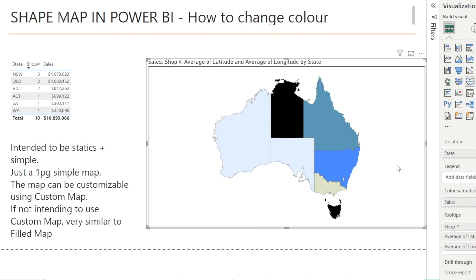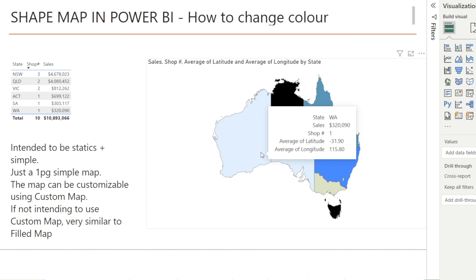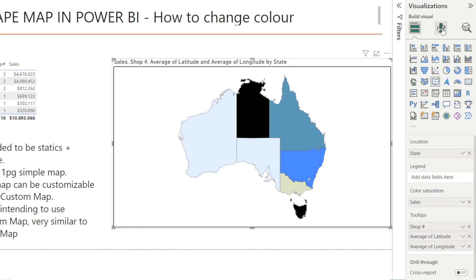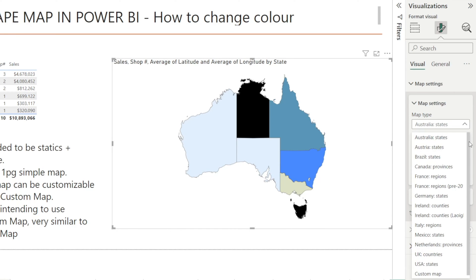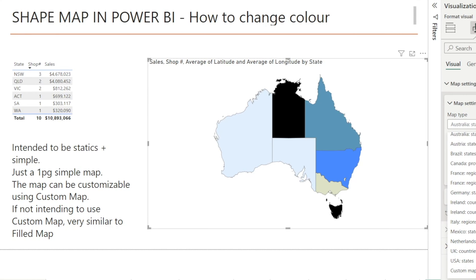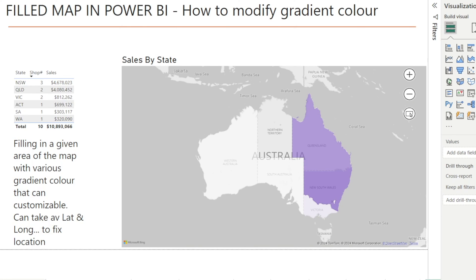The next map is a shape map. Shape map is very similar to field map. The difference is we can't zoom in, so in a way it is probably better to use a field map if the map you want is available in field map, such as Australia by state. However, shape map has a plus: you can create your own custom map and load it. In the map settings, there are some standard maps by state, but there is also the ability to create a custom map. If you are not intending to customize, my recommendation is to use field map because there is more flexibility to zoom in, zoom out, and do other things.